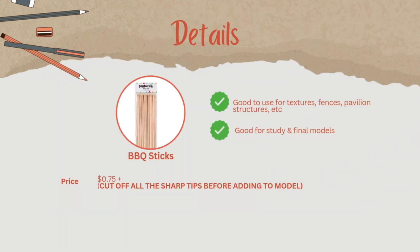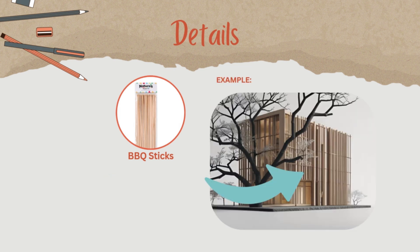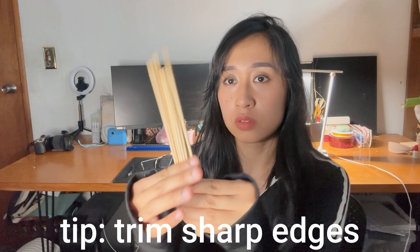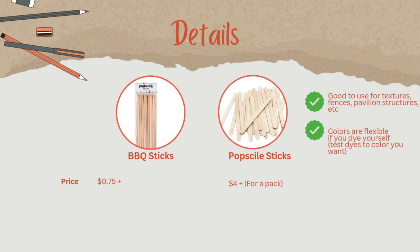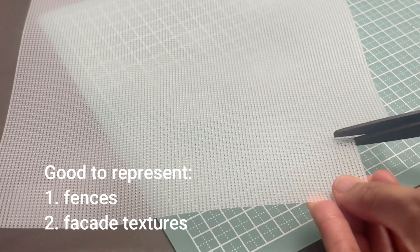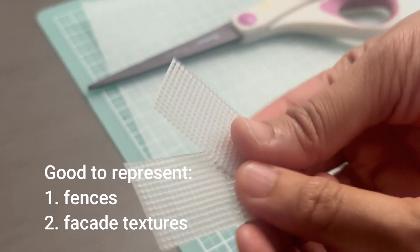For detail ideas: barbecue skewers are great for wood textures or repeating architectural patterns — just remember to trim the edges, and please do not use chewed-up barbecue sticks. Next: popsicle sticks. They're cheap, around four dollars per pack, and you can cut them to size for structures, cladding, or framing. Finally: stitch canvas. It's flexible, easy to cut, and works well for fences or facade textures.